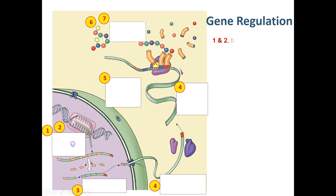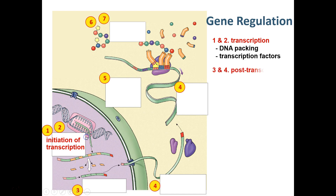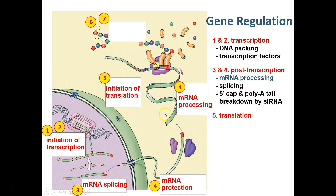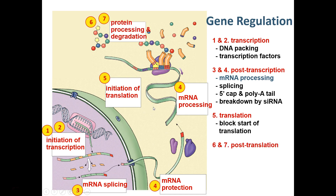To summarize the control points: DNA packing and transcription factors are the first points. Post-transcriptional control covers mRNA splicing, mRNA protection via the 5' cap and poly-A tail, siRNA, and mRNA processing. Translation can be turned off. Post-translational control ensures the protein is properly working, and when it's no longer needed it gets degraded. If you had a protein needed for a very specific task, keeping it around when no longer needed could be dangerous or problematic.